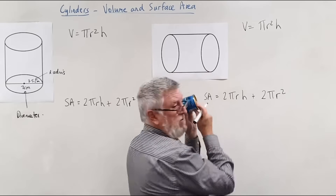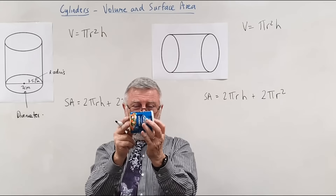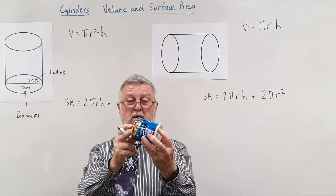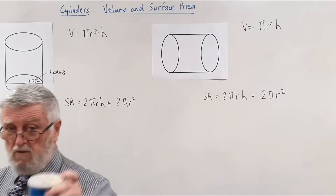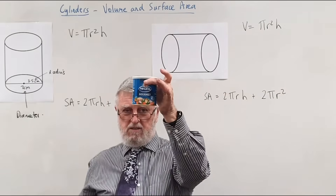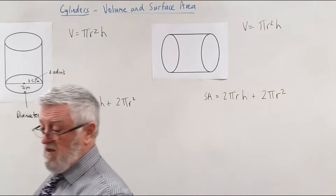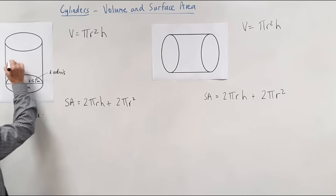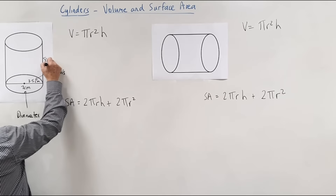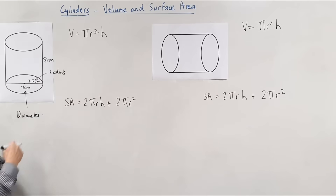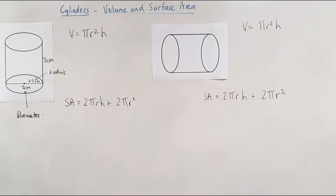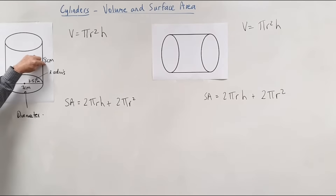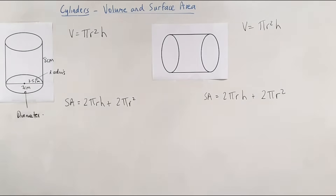So if I draw it laying down, the distance between the two circles is still called the height — just like my height lying in bed is still my height. To summarize: we measure how wide it is, called the diameter, and how tall it is, called the height. That was eight centimeters from this circle to that circle.